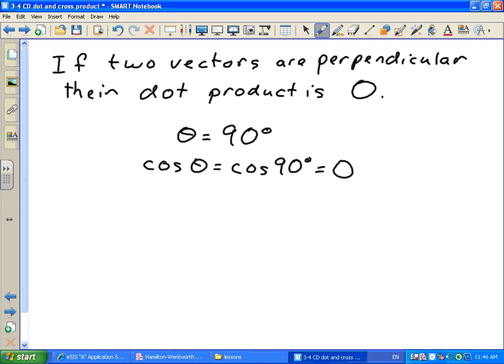So this gives you a good way of checking if two vectors are perpendicular or not. Take the dot product. If it works out to zero, they're perpendicular. If it works out to something other than zero, they are clearly not perpendicular.